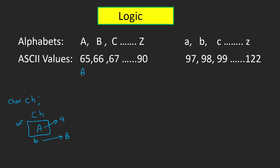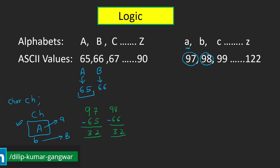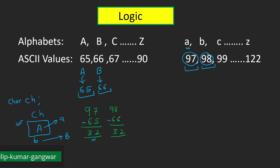Let's say you have capital 'A' as input — that's the uppercase form — and you want to convert it to small 'a'. The C compiler treats capital 'A' as 65 internally, so you want to convert 65 into 97, which is lowercase 'a'. Likewise, capital 'B' has ASCII value 66 and you want to convert it to 98, which is small 'b'. The difference between 65 and 97 is 32, and the difference between 66 and 98 is also 32.